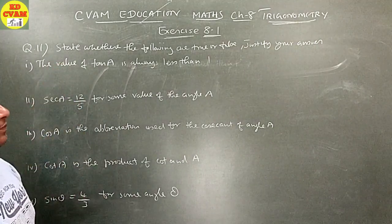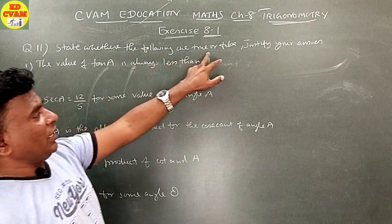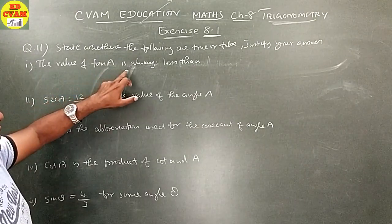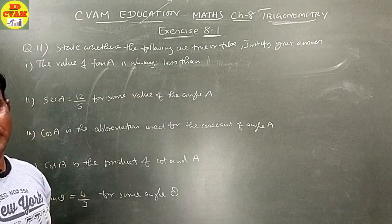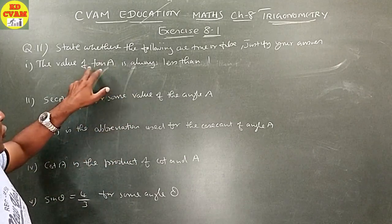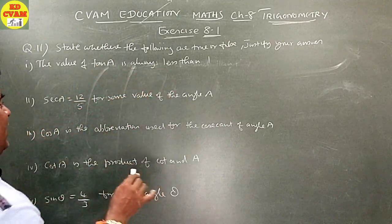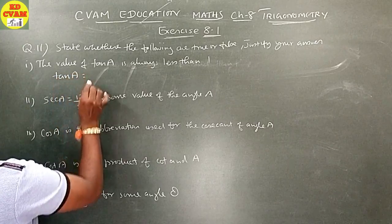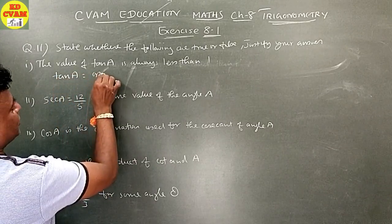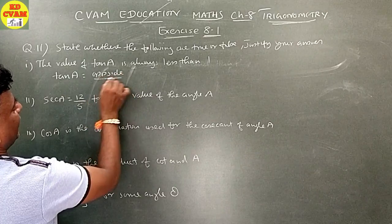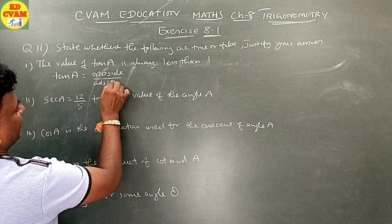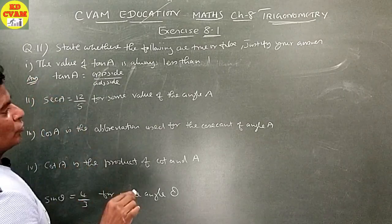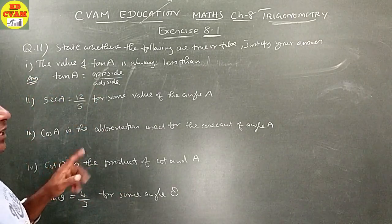Question number 11: state whether the following are true or false and justify your answer. First: the value of tan A is always less than 1. Tan A equals opposite side upon adjacent side.